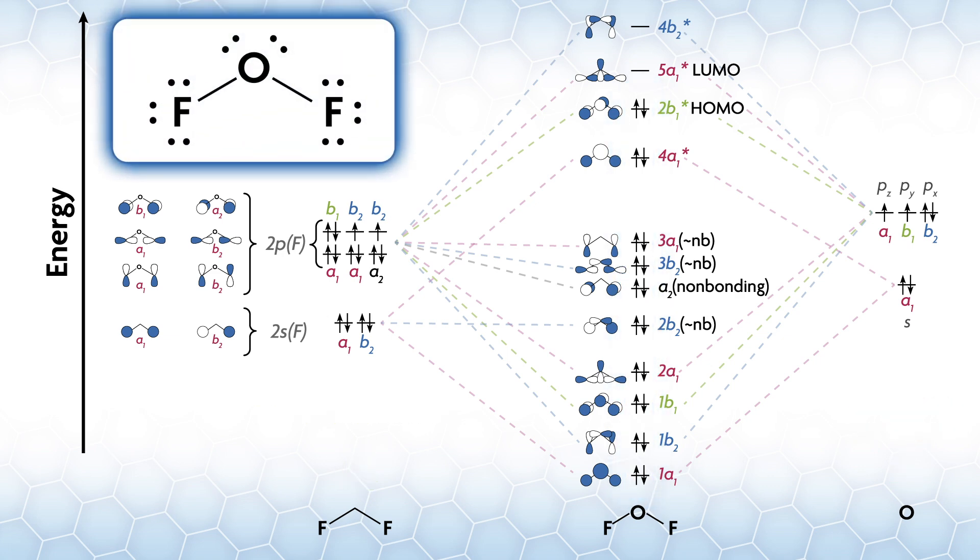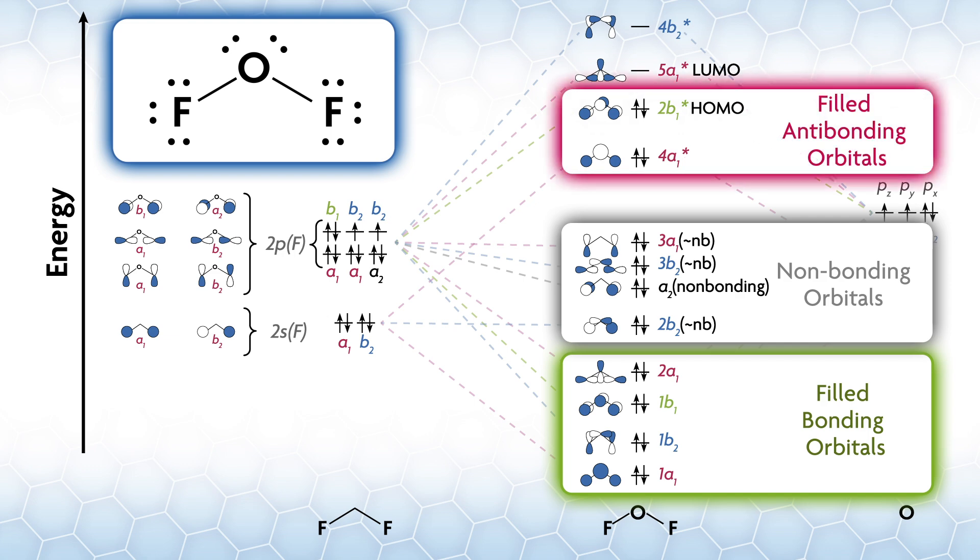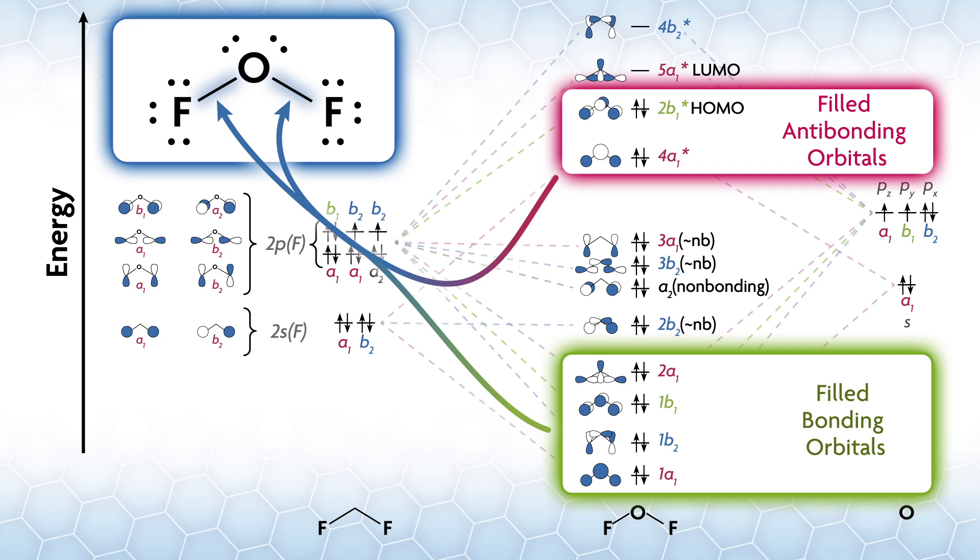I said earlier that the number of bonds and lone pairs in the MO should match the Lewis diagram. The Lewis diagram has two bonds and eight lone pairs. Our MO diagram has four filled bonding orbitals: 1A1, 1B2, 1B1, and 2A1. Then there are four non-bonding orbitals that are filled: 2B2, A2, 3B2, and 3A1. Finally, there are two filled antibonding orbitals: 4A1 star and 2B1 star. With four bonding and two antibonding orbitals filled, then there are two net bonds in the molecule, just like in the MO diagram.